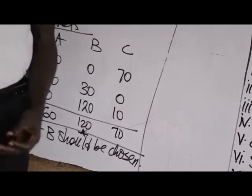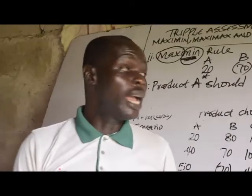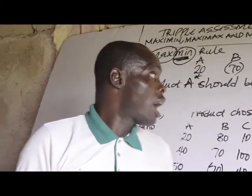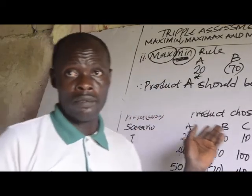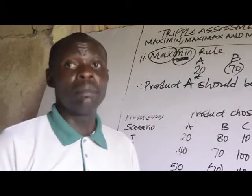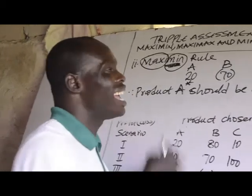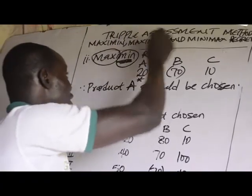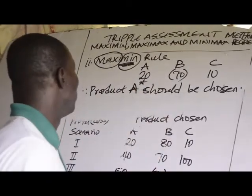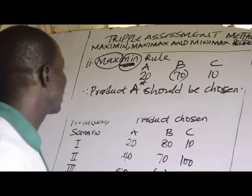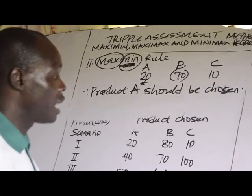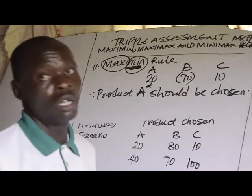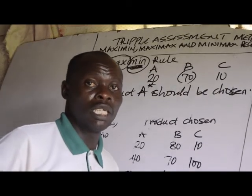That is the solution to the question. This is the end of this presentation. In the next part, I will examine the calculation of the payoff table and solve a comprehensive examination question involving the payoff table together with all three triple assessment rules — Maximax, Maximin, and Minimax regret. Thanks for watching.